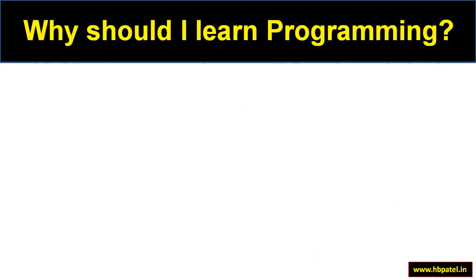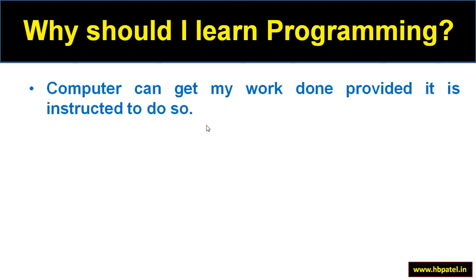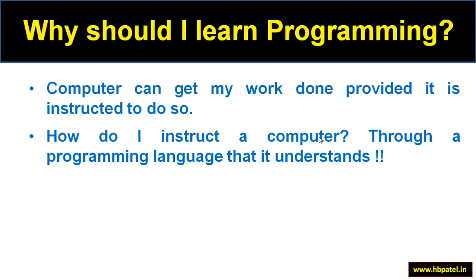Now let us ask ourselves: why should I learn programming? This applies to any programming language, not just C. The key point is that a computer can get our work done provided it is instructed to do so. Because a computer does not understand our language, we need to tell it exactly what we want. That's why we need to learn a programming language like C, C++, or Java — there are many different programming languages. Once we learn such a language, we can communicate with the computer and ask it to do specific tasks.